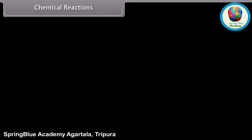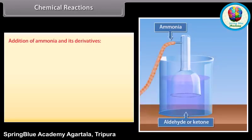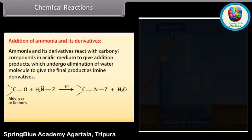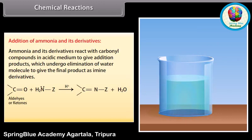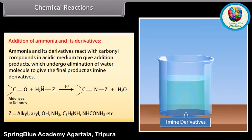Addition of ammonia and its derivatives: ammonia and its derivatives react with carbonyl compounds in acidic medium to give addition products which undergo elimination of a water molecule to give the final product as imine derivatives. Z can be alkyl, aryl, OH, NH2, C6H5NH, NHCONH2, etc.